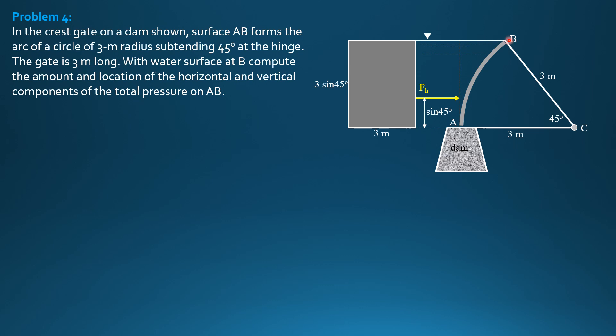Then, the volume to be considered is the volume bounded by the curve, this vertical line here, point B, and this water surface. So this is the volume to be considered. And this volume is area of the shape times 3 meters.